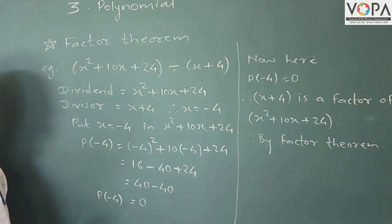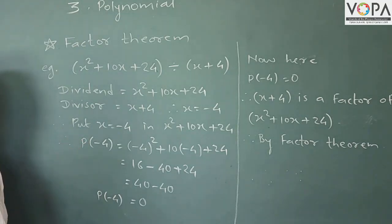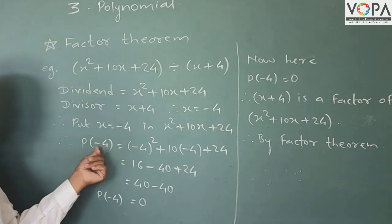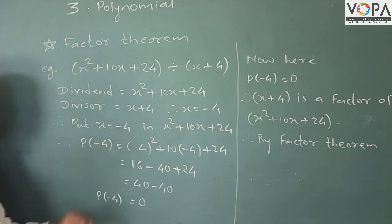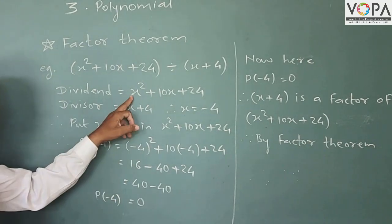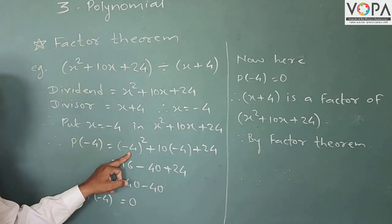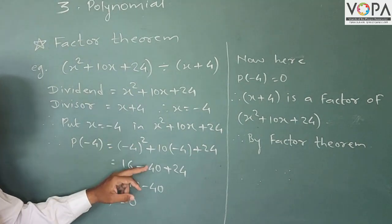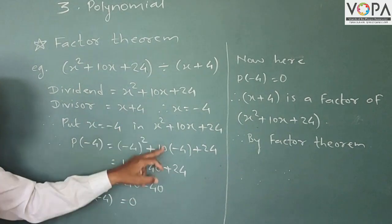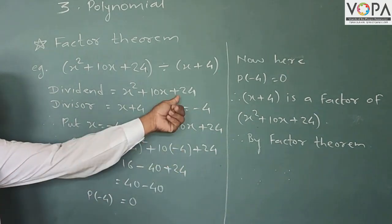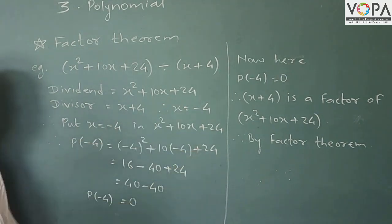In the last practice set, we found the remainder using the remainder theorem. Now here, put p(−4): that means x² + 10x + 24, substituting x equal to minus 4. So we have (−4)² plus 10 times (−4) plus 24.